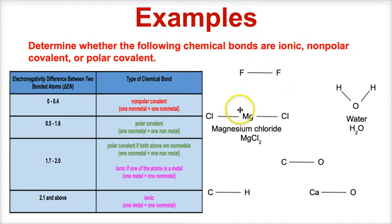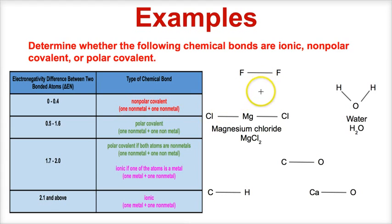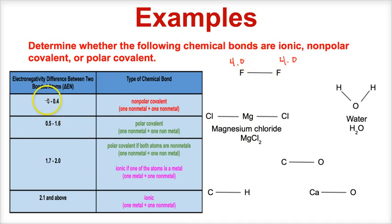You need to determine what type of chemical bonds exist between each of these atoms. What type of chemical bond exists between fluorine and fluorine? If we look at the electronegativity chart or periodic table, both fluorine atoms have an electronegativity of 4.0. Subtracting and taking the absolute value gives an electronegativity difference of 0. So this will be a nonpolar covalent bond — NPC. The electrons are being shared equally.